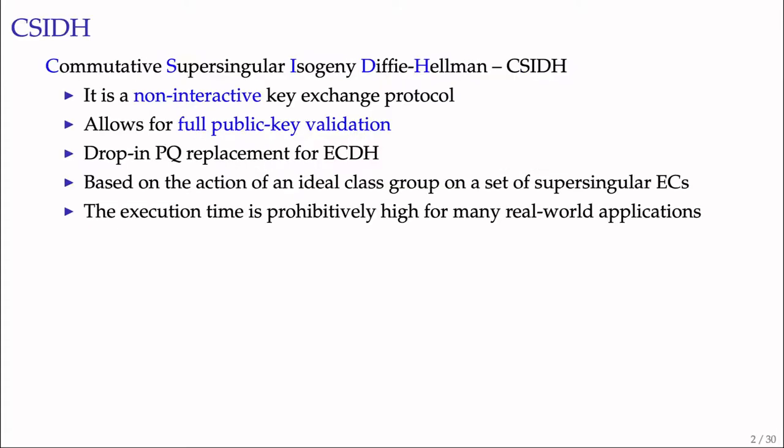Commutative supersingular isogeny Diffie-Hellman, or CSIDH for short, is a recently proposed post-quantum key establishment scheme belonging to the family of isogeny-based cryptosystems. It comes with highly attractive features like efficient validation of public keys, making it suitable for non-interactive key exchange protocols. In fact, CSIDH has the ability to serve as a drop-in post-quantum replacement for the classical ECDH key exchange.